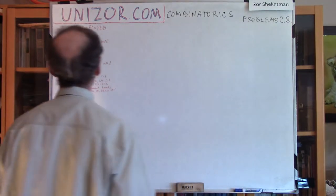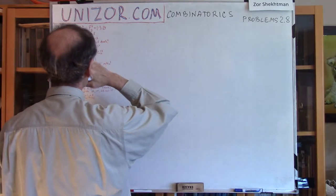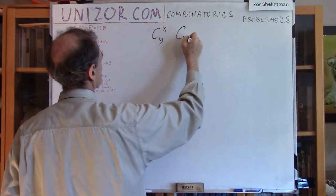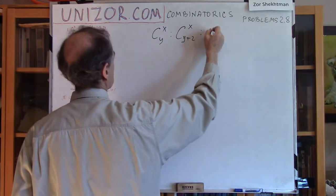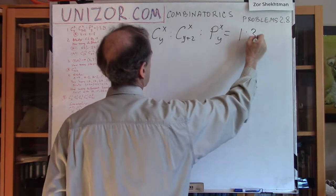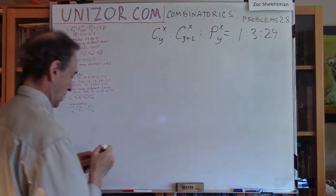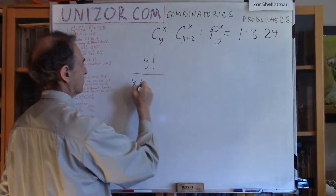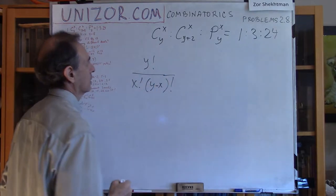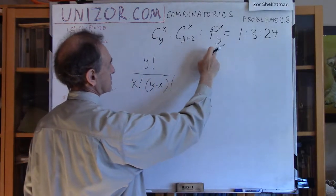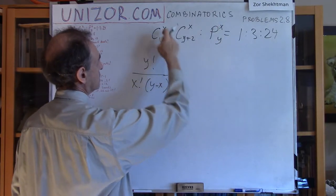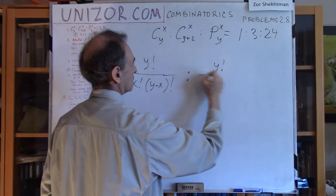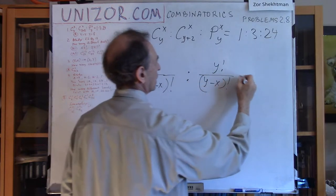We have 4 problems for today. Problem number 1 is basically solving equations, and you have a proportion to solve. This is the number of combinations from y to x, and this is y factorial divided by x factorial and y minus x factorial. Let me take the proportion of the first to the last one, because it seems to be easier. You have x, y here and x, y here. This, as relates to this one, is y factorial divided by y minus x factorial equals 1 to 24.